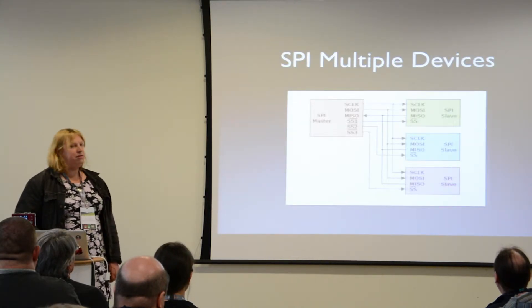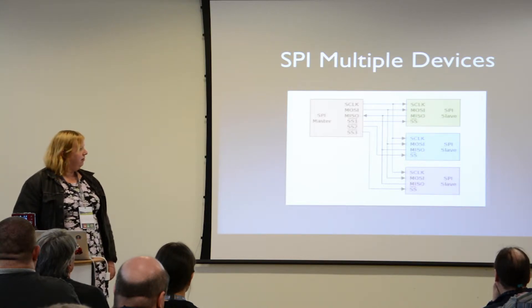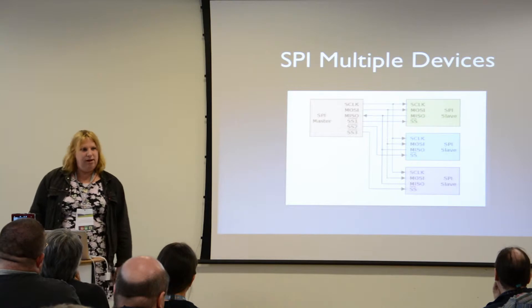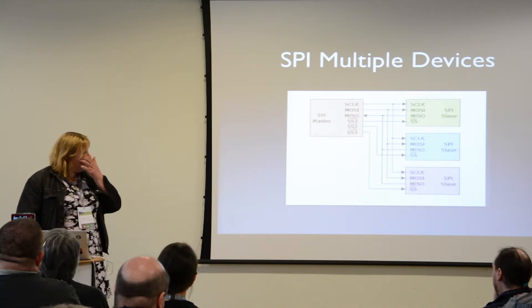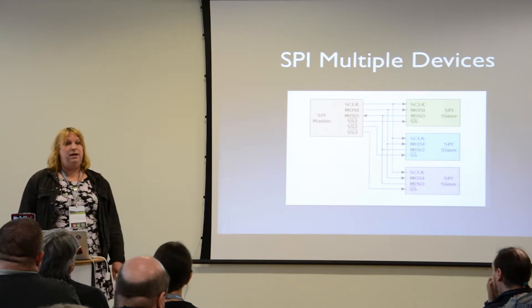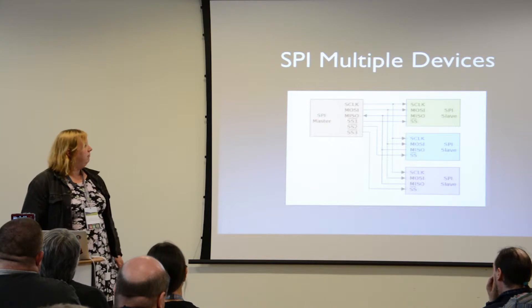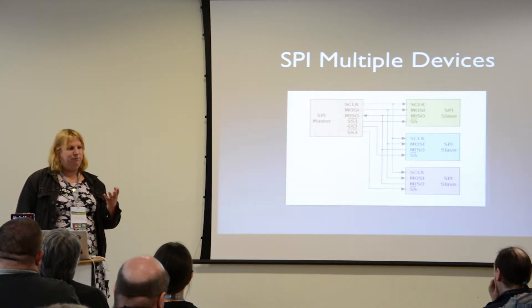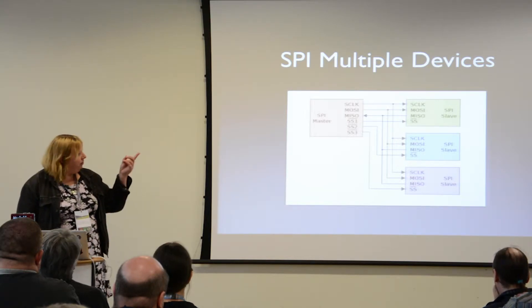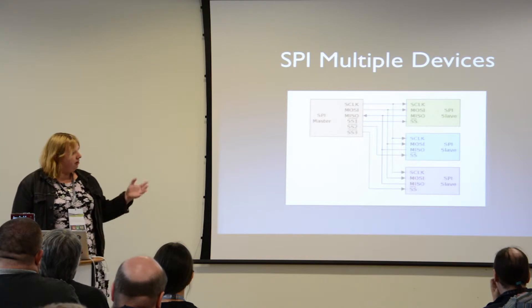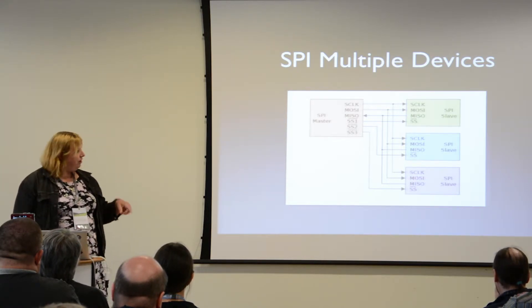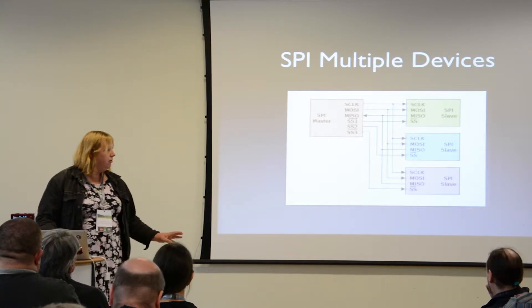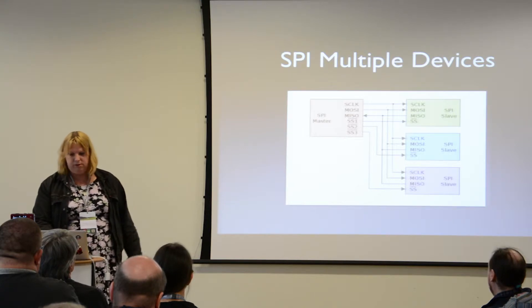For multiple devices, you wire all the MISOs and MOSIs in parallel. You have to have a separate chip select for each slave device. If you're lucky, the SPI master already has that. If you're unlucky and it only has one, you can fake it with something like an LS7138, which is a decoder chip with high and low enables. Connect the low enable to the chip select and use GPIOs to select which slave you're talking to.